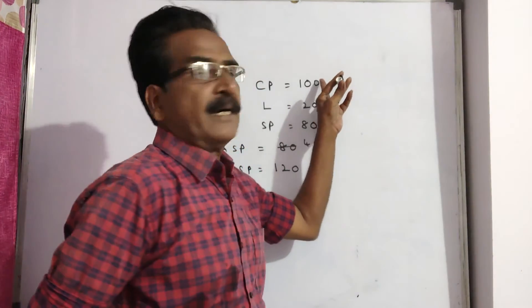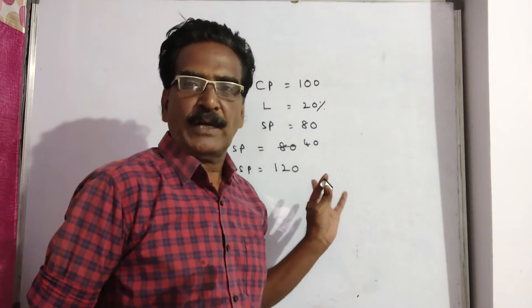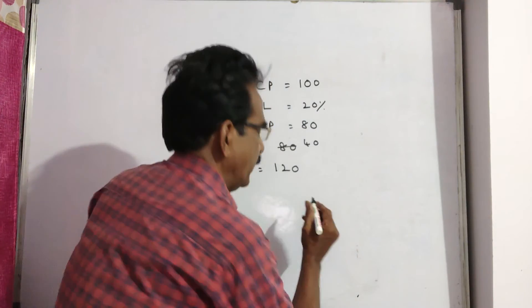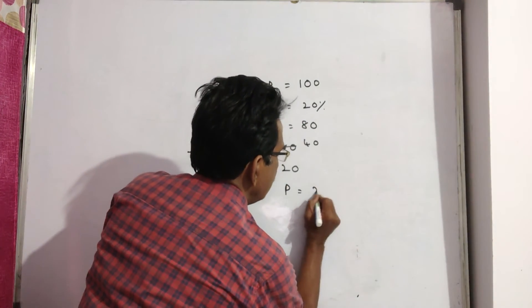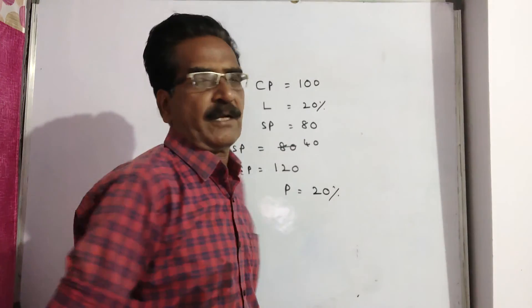Cost price 100, sold price 120. Profit is 20%. This is your answer.